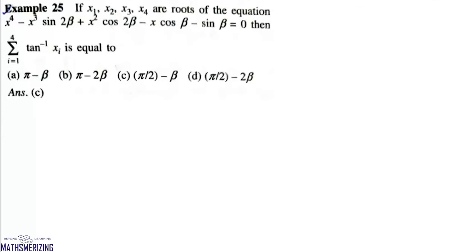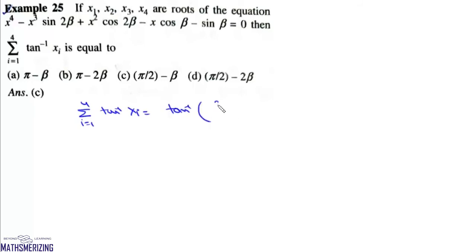Now the question is: if X1, X2, X3, and X4 are roots of the equation X⁴ minus X³·sin(2β) + X²·cos(2β) minus X·cos(β) minus sin(β) = 0, then find the value of the summation of tan⁻¹(Xi) for i = 1 to 4. We know this sum equals tan⁻¹ of (S1 minus S3) divided by (1 minus S2 plus S4).